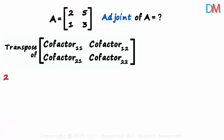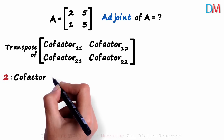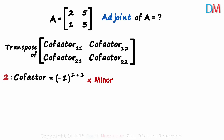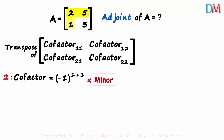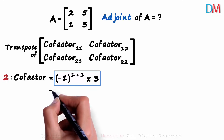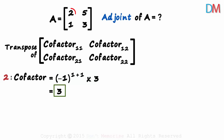The first element is 2. Its cofactor will be negative 1 raised to 1 plus 1, multiplied by its minor. 1 and 1 are the row number and column number of 2. To find the minor, we exclude the row and the column and find the determinant of what remains — the determinant of 3 is 3. Negative 1 raised to 2 is positive 1, and 1 multiplied by 3 equals 3. So 3 is the cofactor of 2.